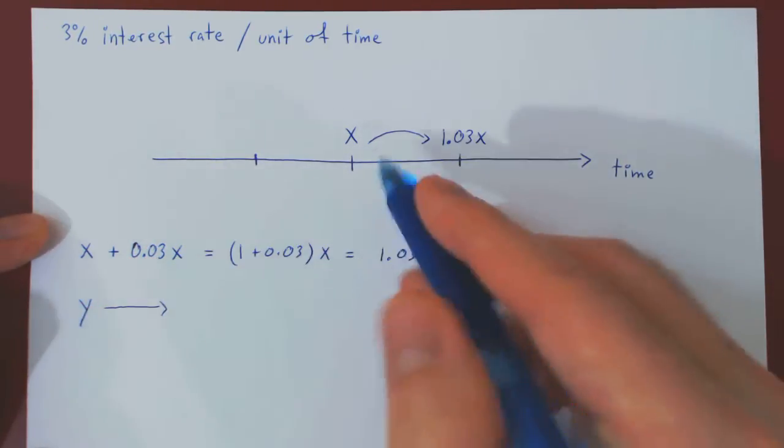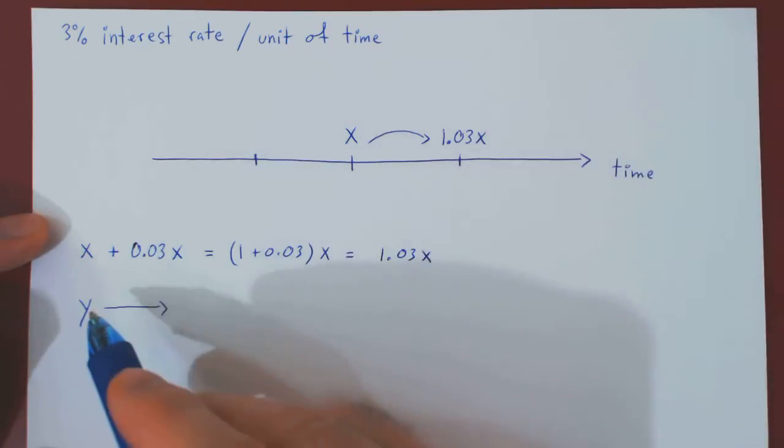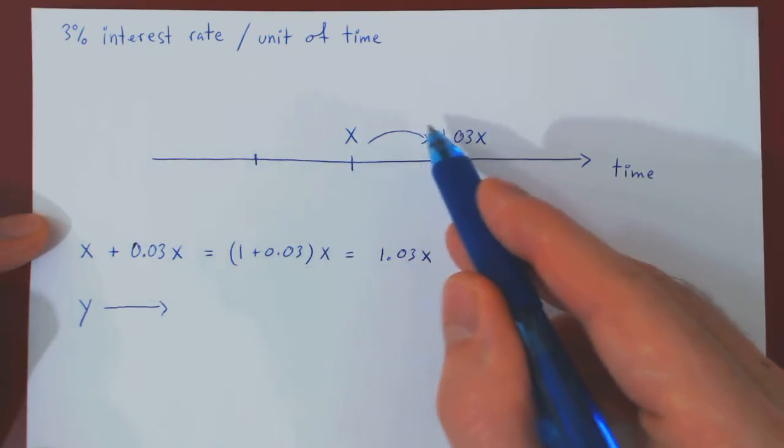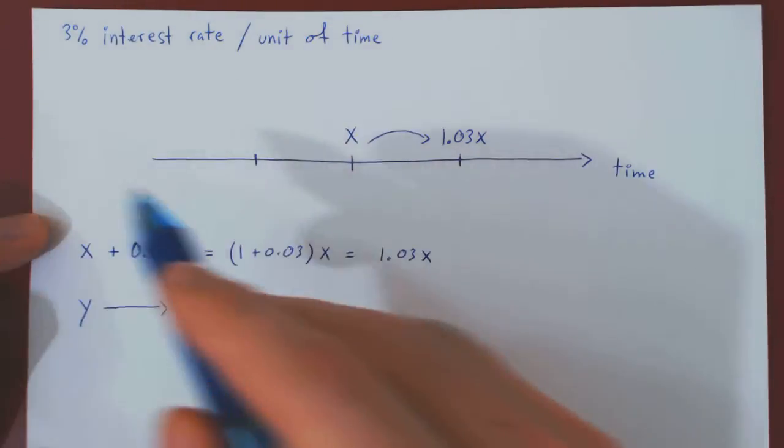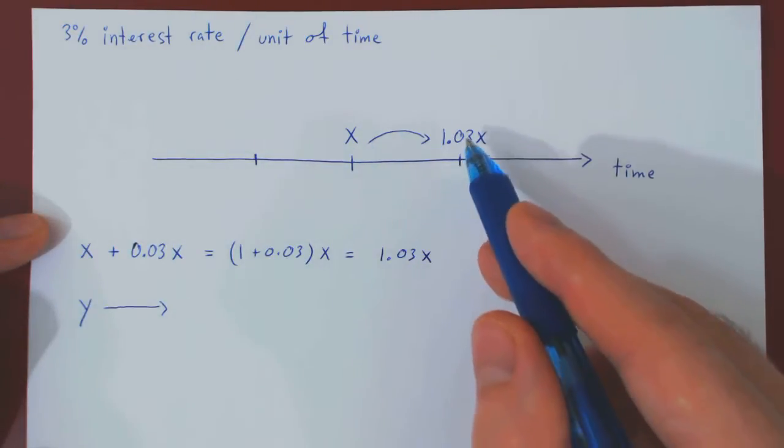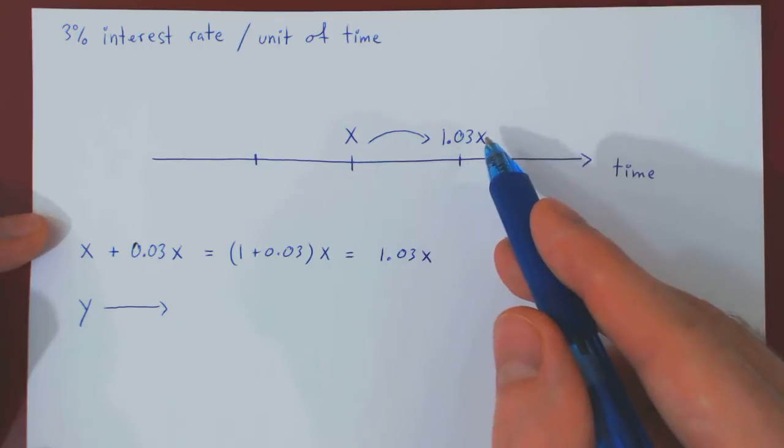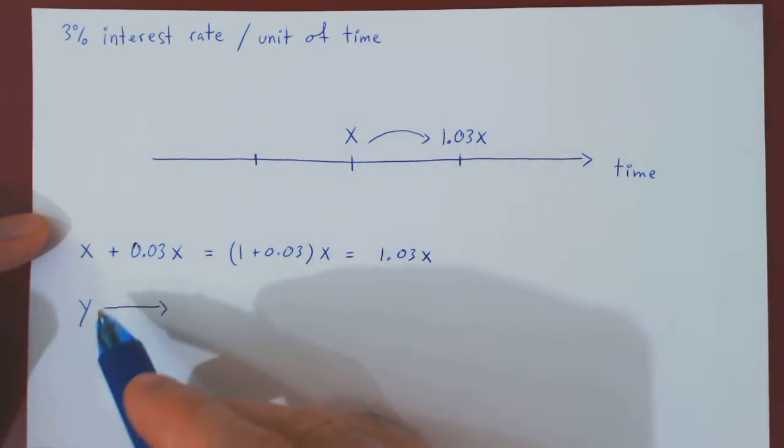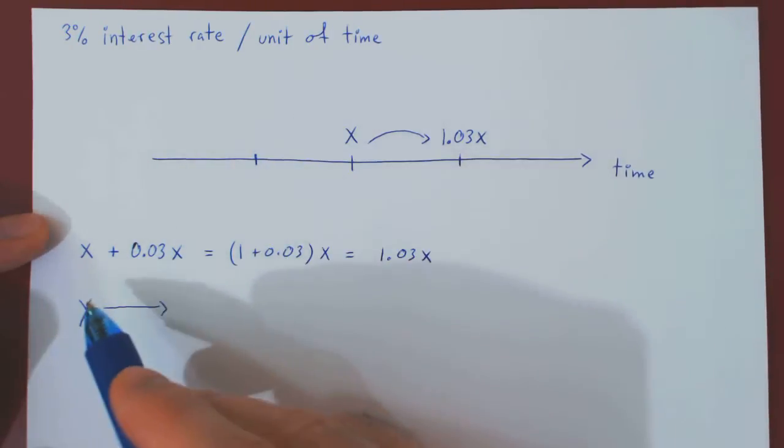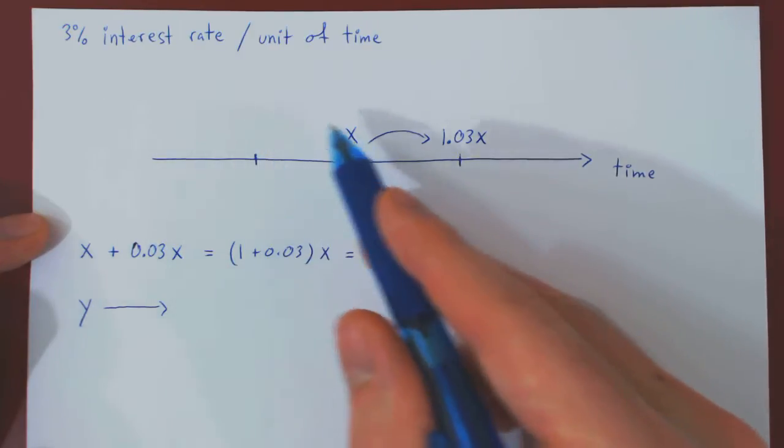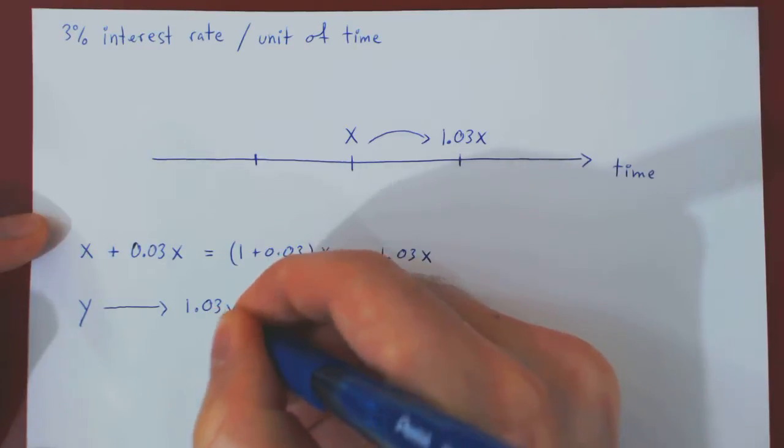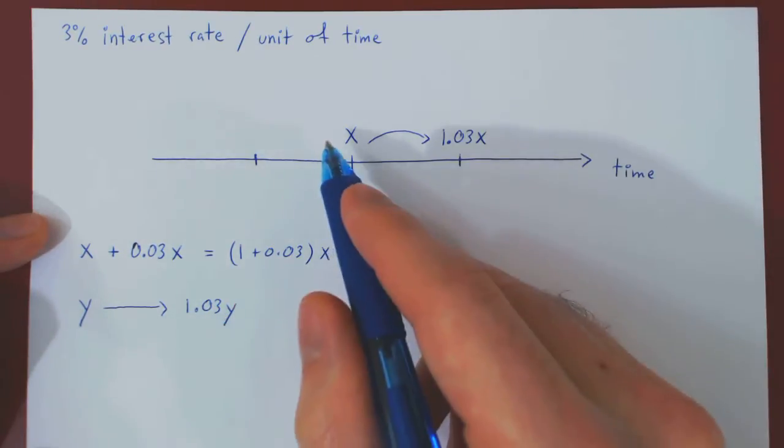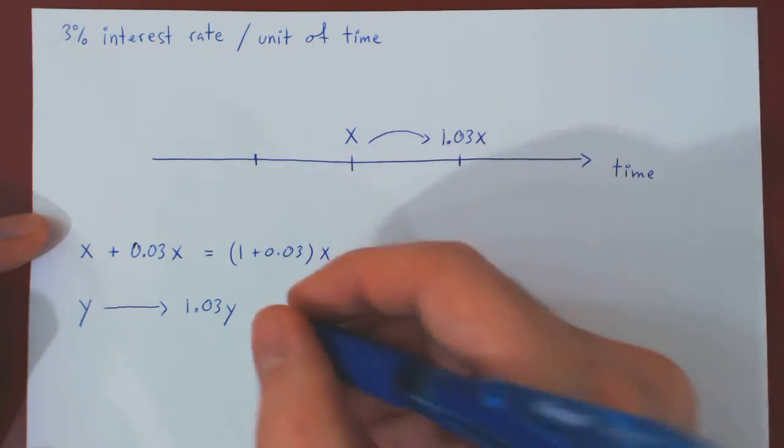But we know that if we take any investment and bring it forward in time by one unit at 3% interest rate, the new value will be 1.03 times the original value. So if Y is the value here, being brought forward in time by one unit, Y will be now worth 1.03 times Y. And this is now what we want to be, the value of X.